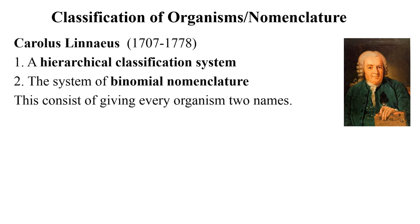Carolus Linnaeus is considered the father of taxonomy because in the 18th century he developed a way to name and organize species that we still use today. His two most important contributions to taxonomy were the hierarchical classification system and the system of binomial nomenclature.